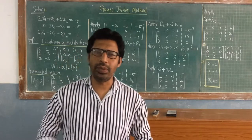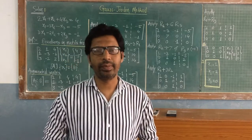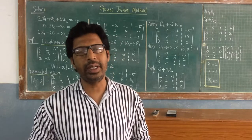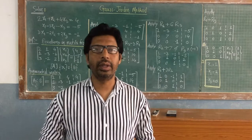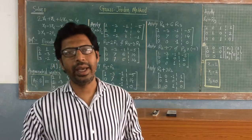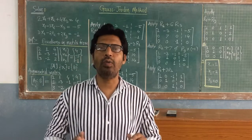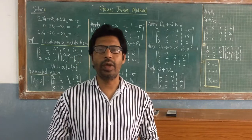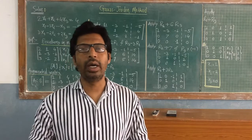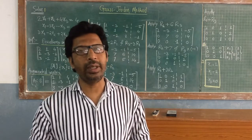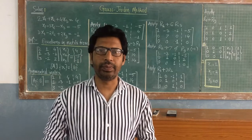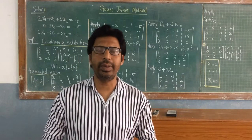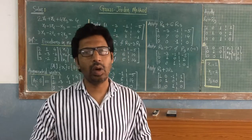The Gauss-Jordan method is almost similar to the Gauss elimination method. The only change is: in Gauss elimination method we convert the lower triangle of the coefficient matrix into zero elements, but in Gauss-Jordan method we convert the coefficient matrix into normal form. Normal form means diagonal elements are 1 and all remaining elements are 0. When you convert the coefficient matrix into normal form, you directly get the values of the unknown variables. We will see the same example already solved by Gauss elimination method, now solved by Gauss-Jordan method.